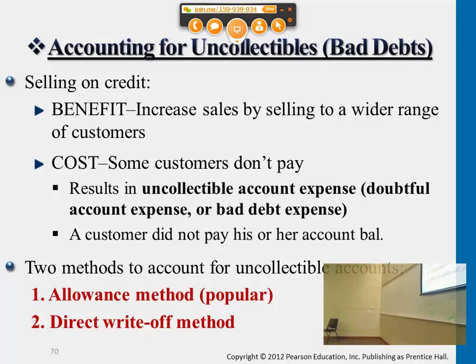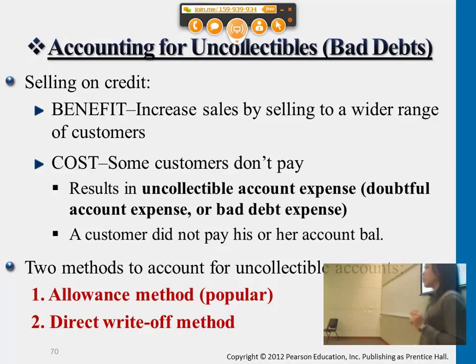The cost here is that some companies don't pay, which results in uncollectible account expense — we also call this doubtful accounts expense or bad debt expense. All these terms are interchangeable and relate to uncollectible accounts.